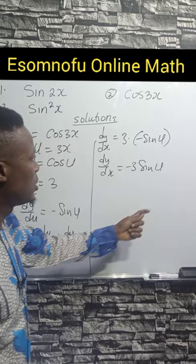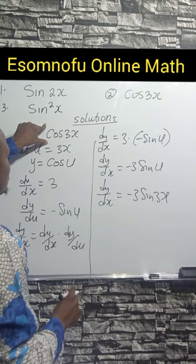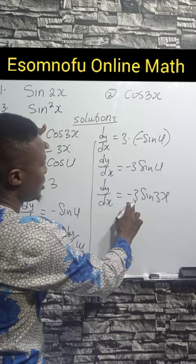So dy/dx equals minus 3sin(3x). Remember the shortcut: cos(3x) changes to minus sin(3x), then differentiate 3x to get 3 and put it there. You get your answer.